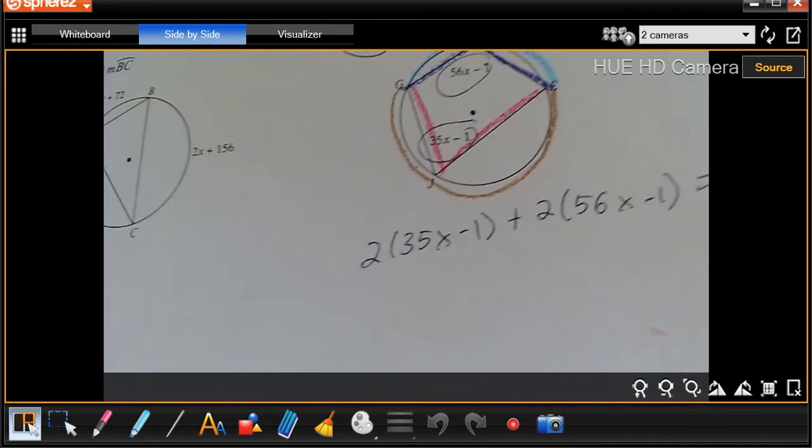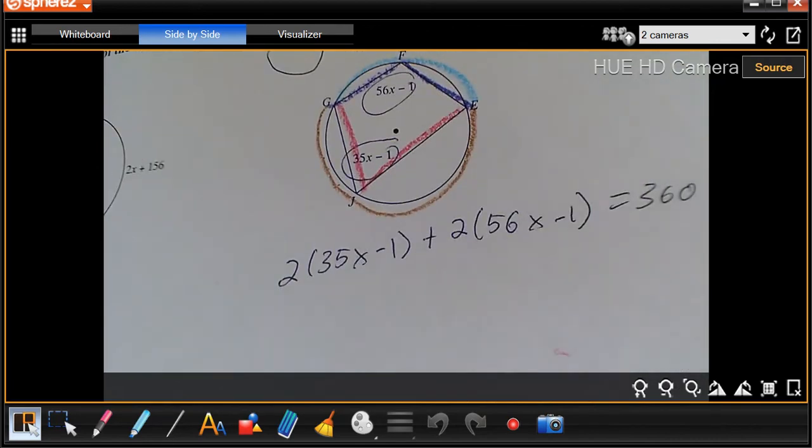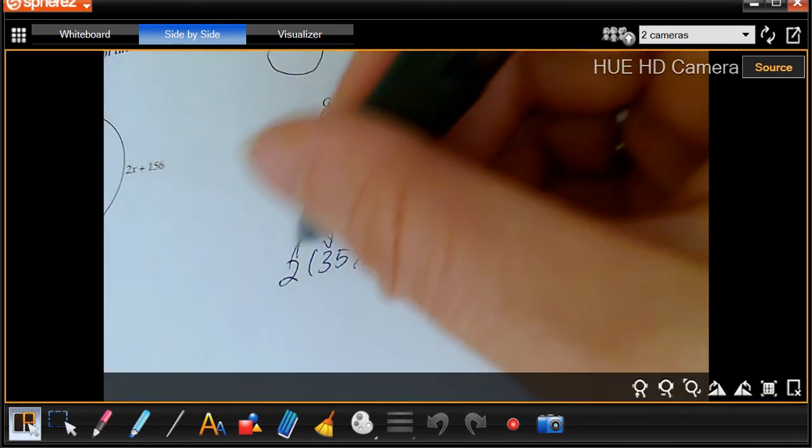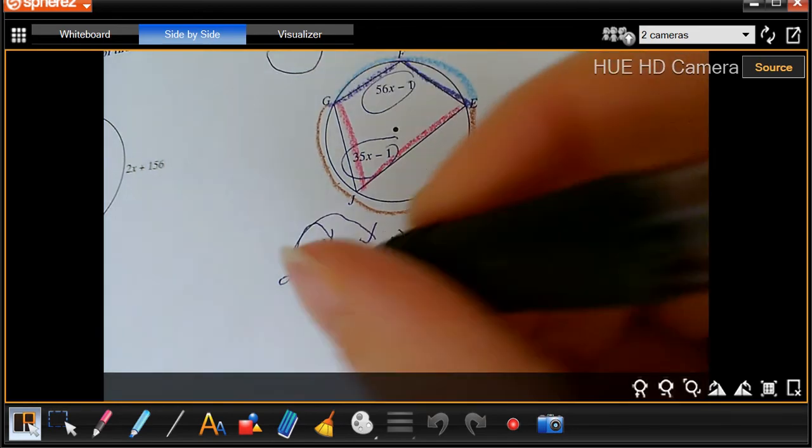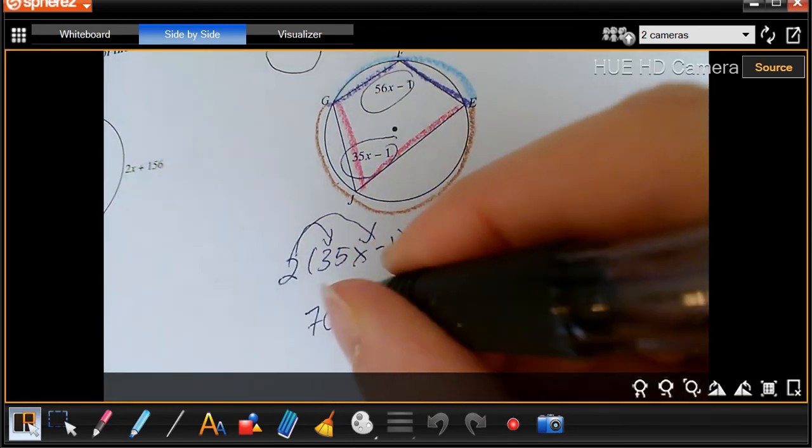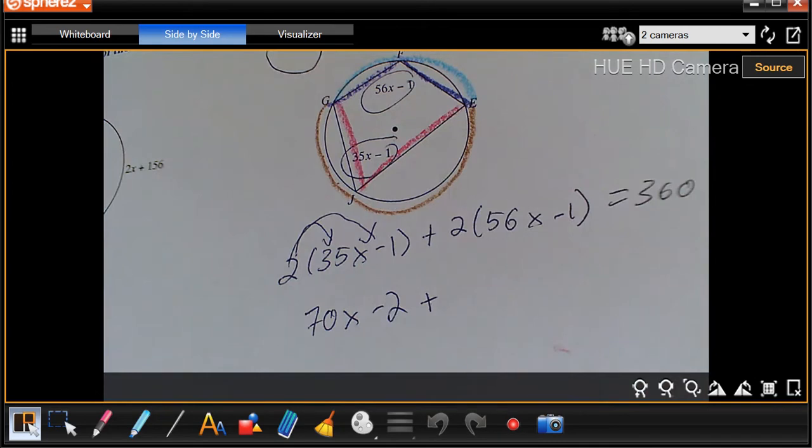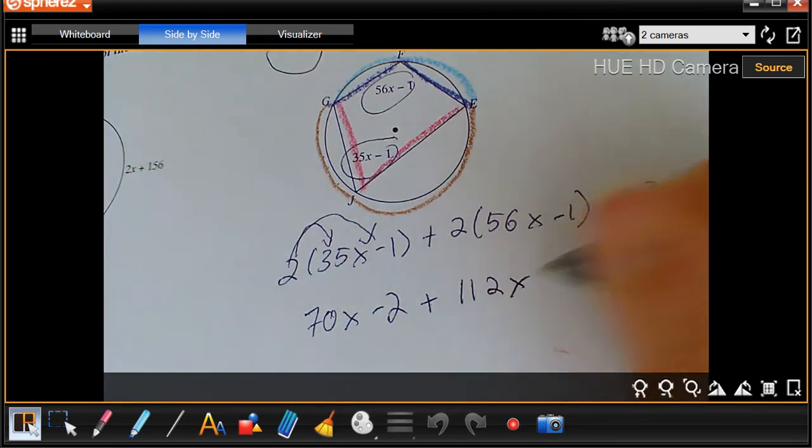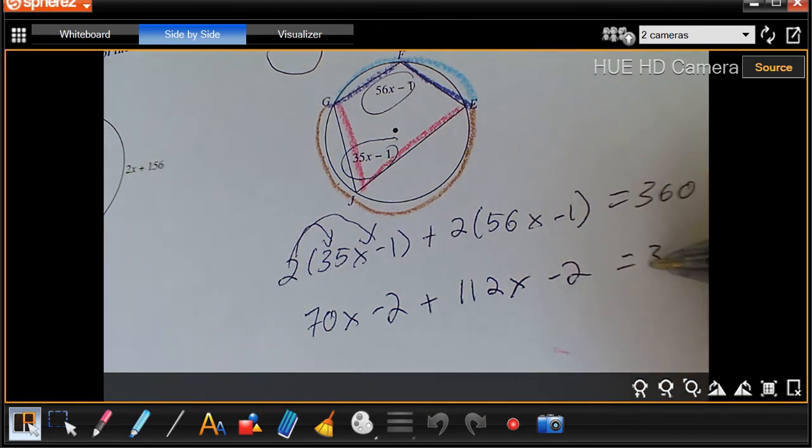I know this looks like a long equation, but it's pretty simple algebra. You're just going to have to distribute the 2 for both of them, then combine like terms, then do some subtraction. So let's go through these steps. First, we're going to multiply by 2. 2 times 35 is 70X minus 2 plus 2 times 56, which is 112X minus 2 equals 360. So that was step 1.